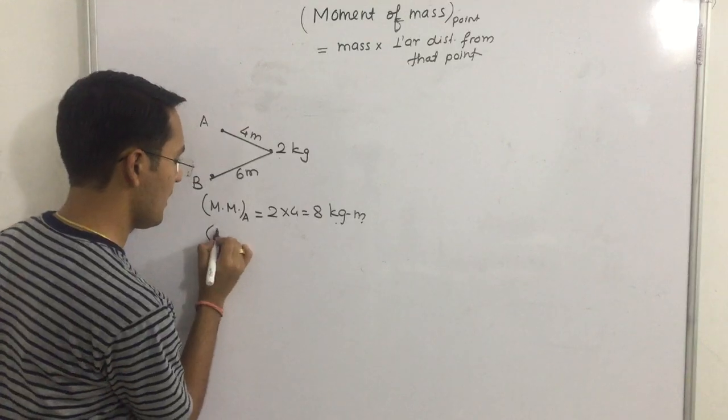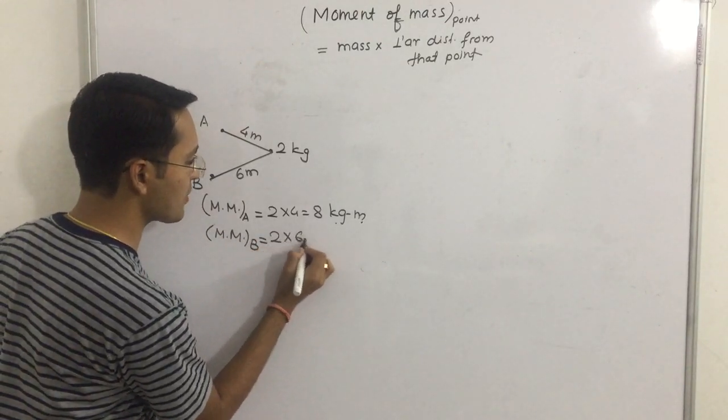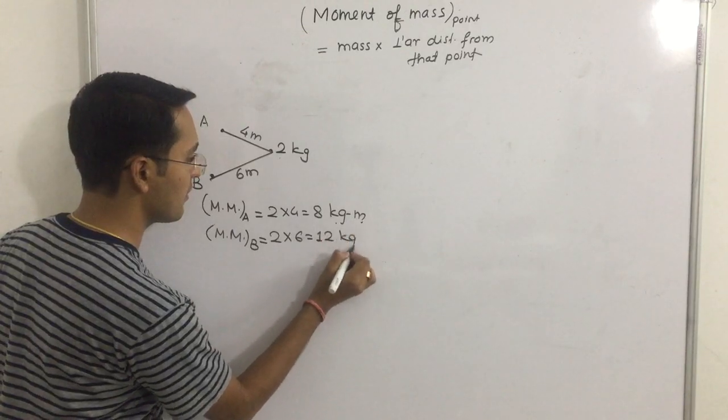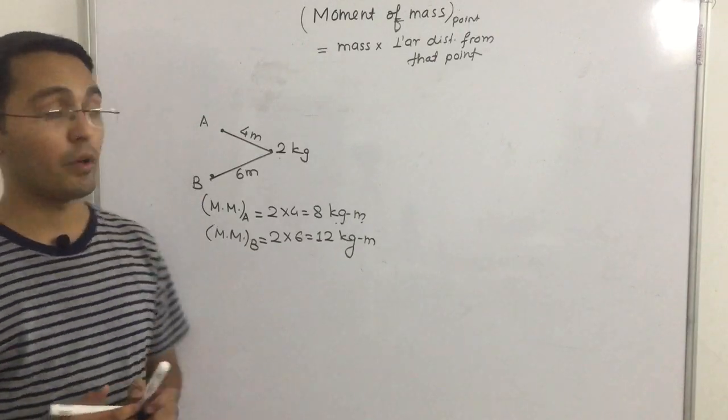If you ask moment of mass about B, you write 2 into 6, which is 12 kg meter. You understand my concept?